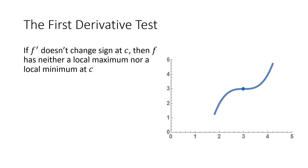This is an example of how that could happen, where at this point in the middle I've got a critical point — a horizontal tangent line — but to the left of this critical point my slope is positive and to the right of that critical point my slope is also positive. So that's neither a max nor a min.